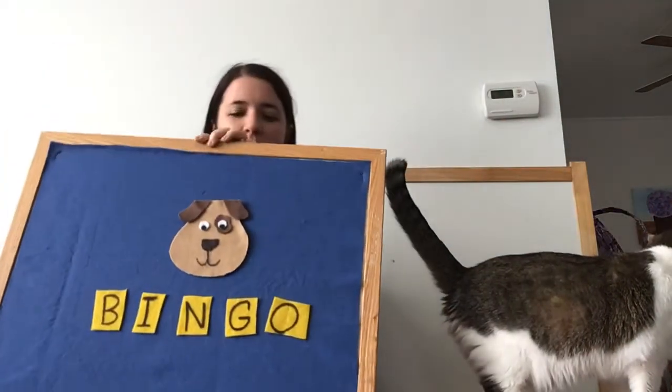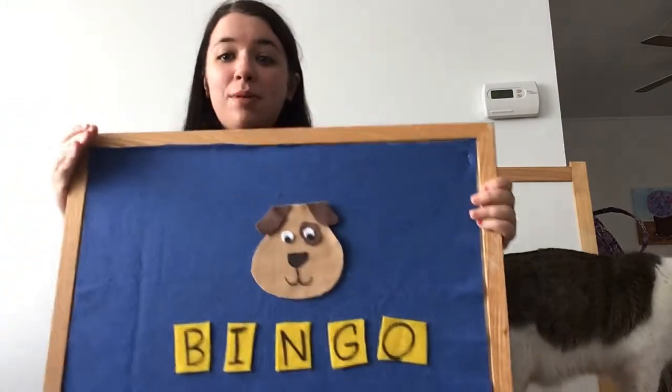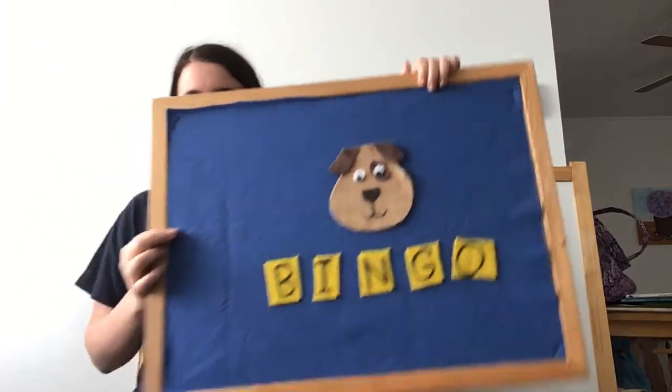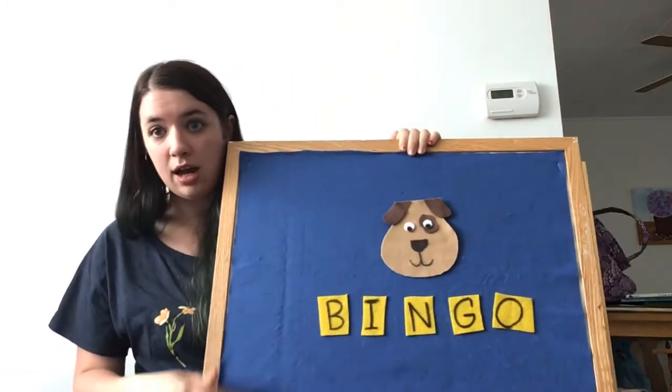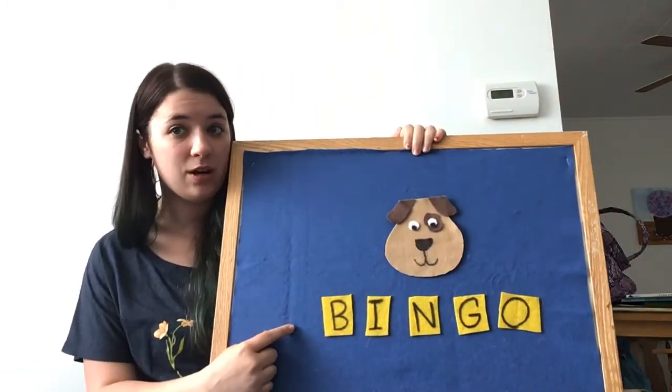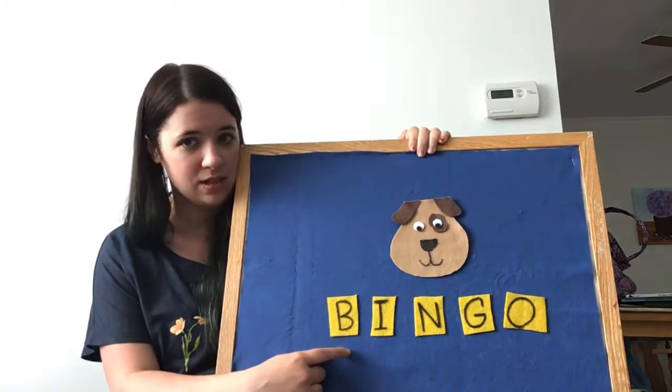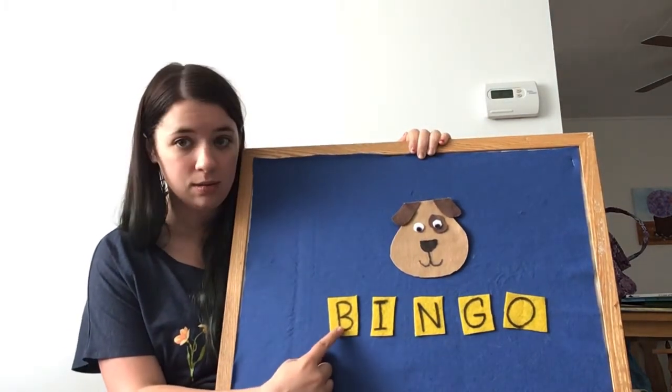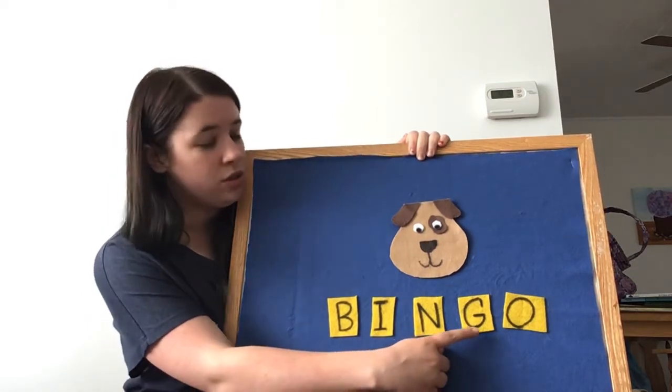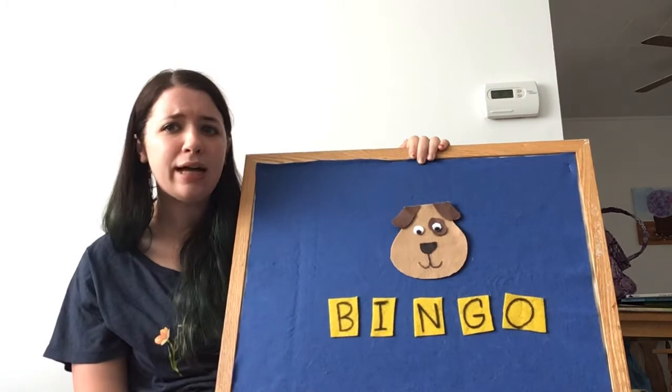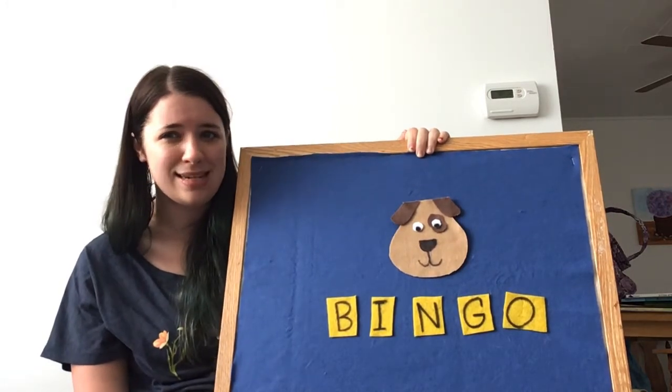So, on my board here, I don't know if you can see, but I have bingo. So, this is a picture of a little doggie, and I have his name spelled here. So, let's see if we can spell his name. Ready? B-I-N-G-O.